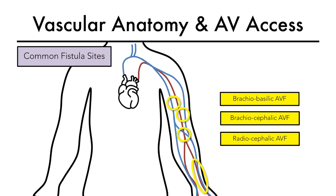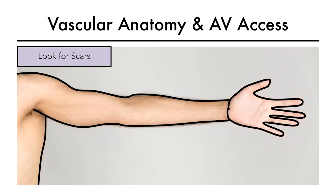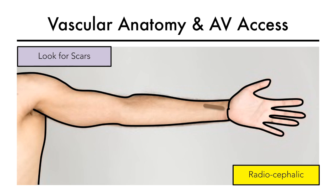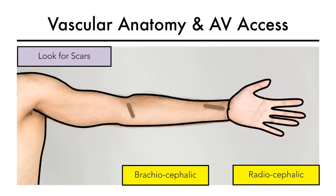When you see a patient post fistula creation, the position of the scar can give you a clue as to what type of AV fistula it is. A scar around the wrist typically is from a radiocephalic fistula. A scar around the antecubital fossa is often indicative of a brachiocephalic fistula, and a linear vertical scar along the medial aspect of the arm typically points to a brachiobasi­lic fistula.